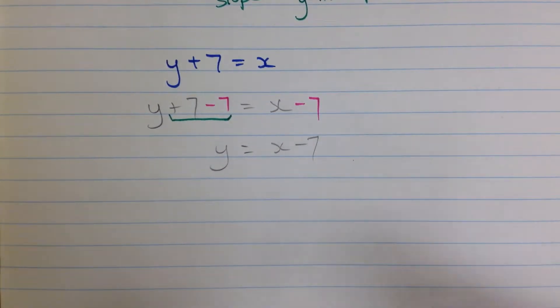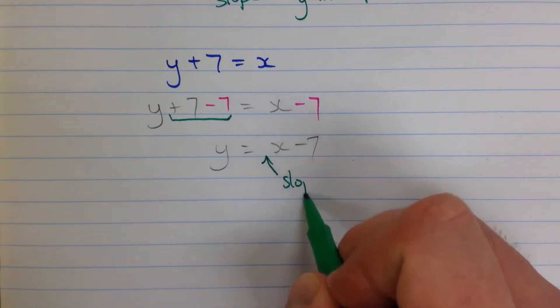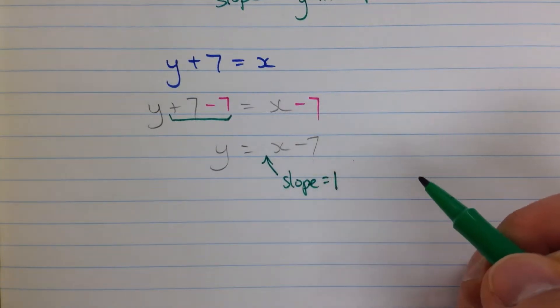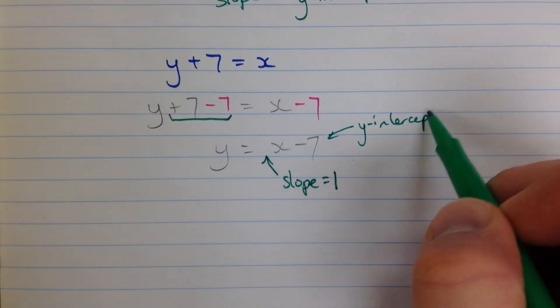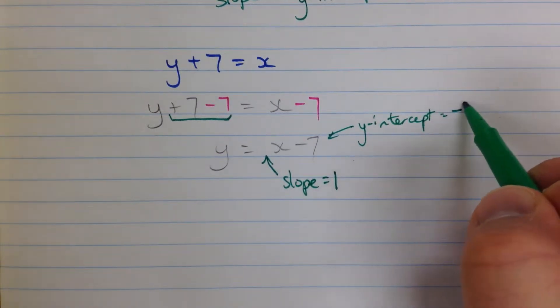And over here we have x minus 7. So we're finished now. We have our slope y-intercept form.